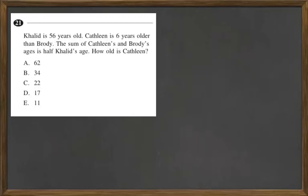Khalid is 56 years old. Kathleen is 6 years older than Brody. The sum of Kathleen's and Brody's ages is half of Khalid's age. So how old is Kathleen?